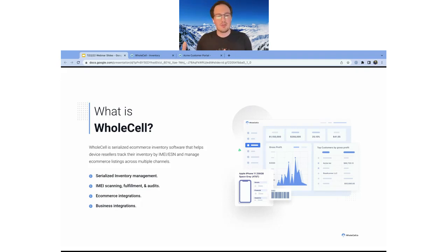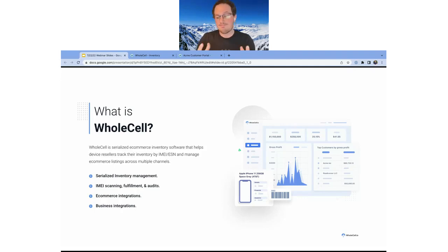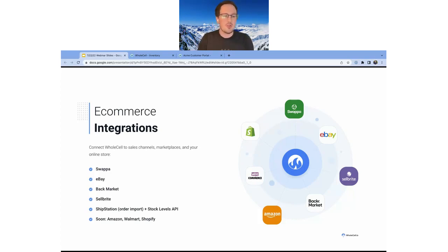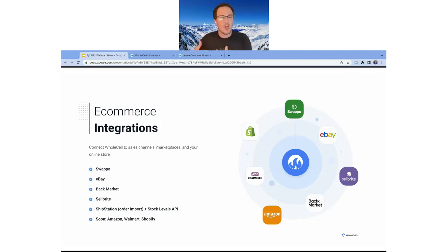Wholesale has a whole suite of tools for managing serialized inventory at scale. We also have e-commerce integrations and business integrations that connect wholesale to other pieces of software — several of which are industry specific. These marketplace integrations let you maintain your listings and keep your stock levels live and accurate. We have a Swappa integration, an eBay integration, and a Back Market integration — direct integrations that sync your stock quantities so you can sell on all the marketplaces at once.